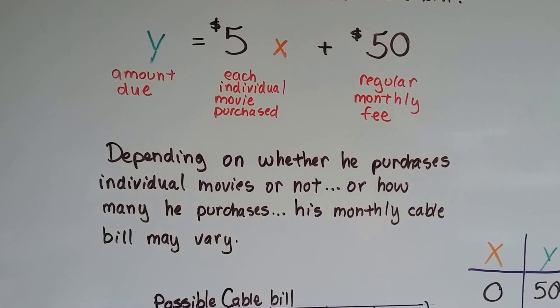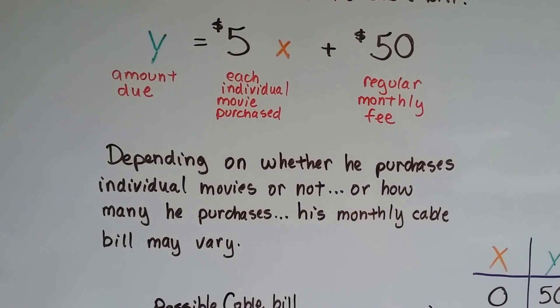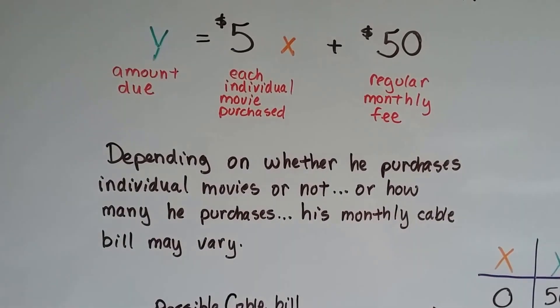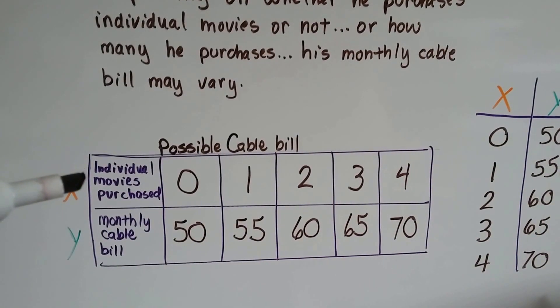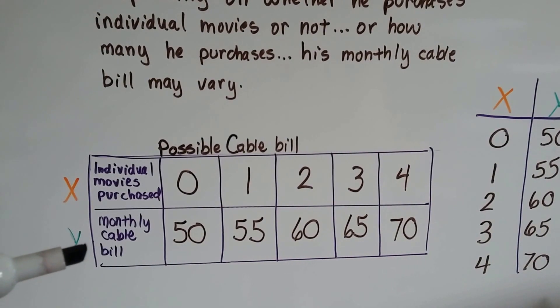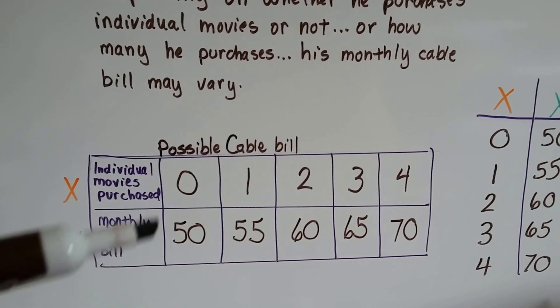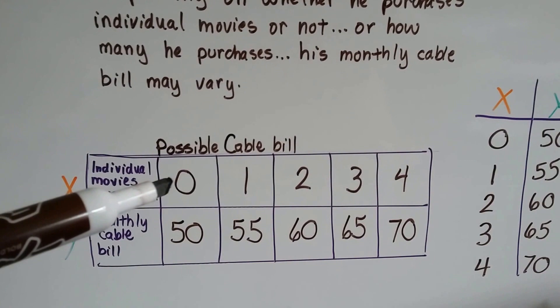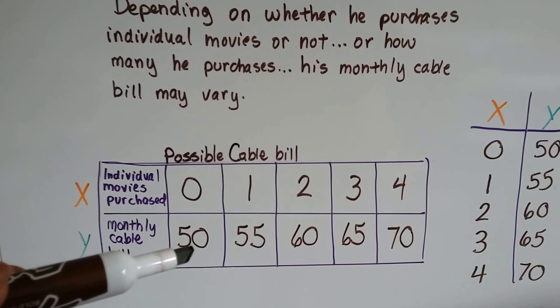So, depending on whether he purchases individual movies or not, or how many he purchases, his monthly cable bill may vary. X is the individual movies purchased. Y is what his monthly cable bill is going to be. If he purchases zero movies, his bill is going to be $50.